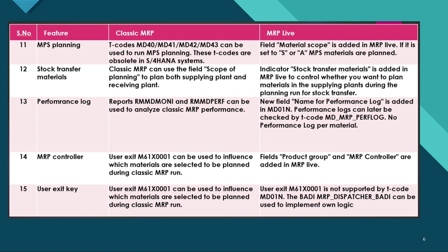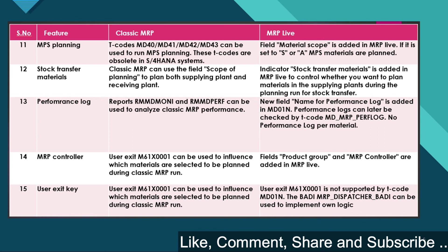For MRP controller: user exit M61X001 can be used to influence which materials are selected to be planned in classic MRP. In MRP Live, the fields 'product group' and 'MRP controller' are added. Regarding user exit: the user exit is not supported by MD01N in MRP Live, but a BAPI can be used to implement the old logic.